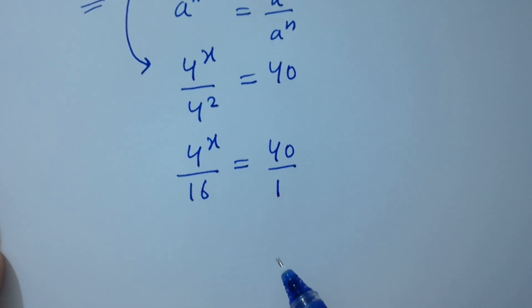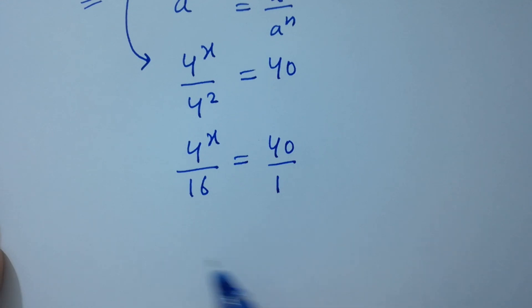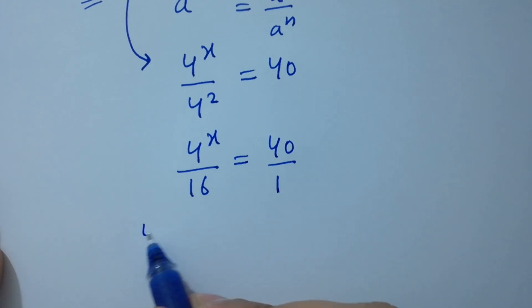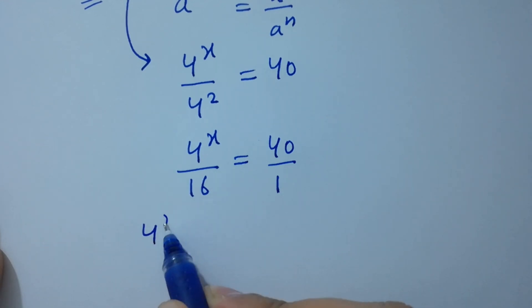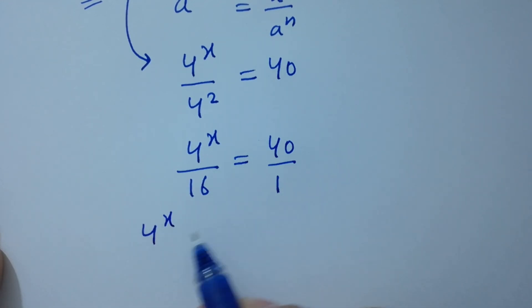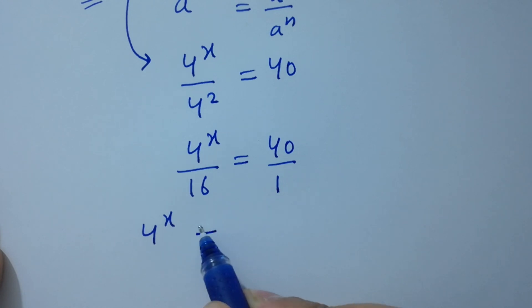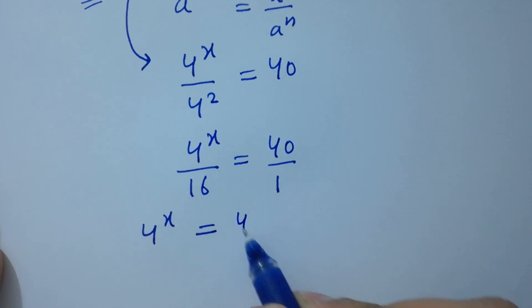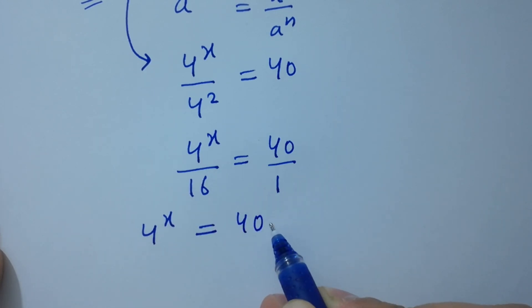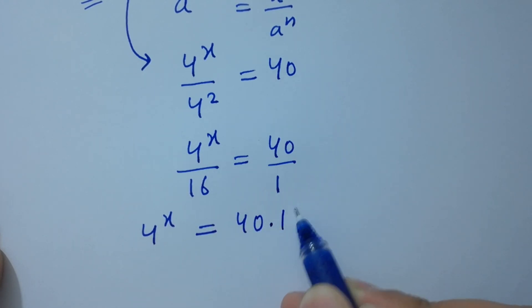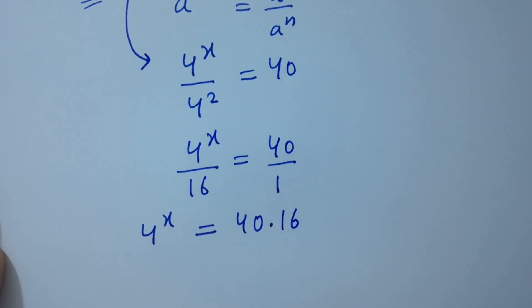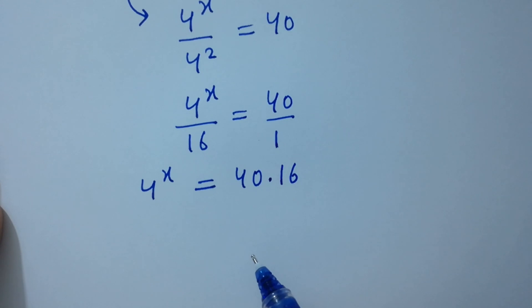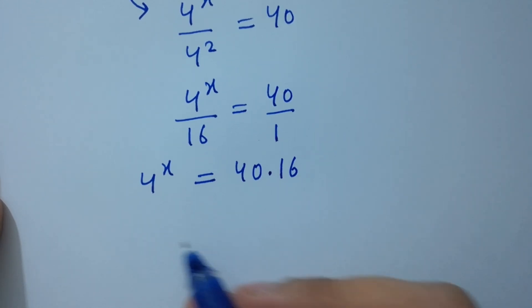By cross multiplication, we have 4 to the power x times 1, so 4 to the power x equals 40 times 16. Take log on both sides.